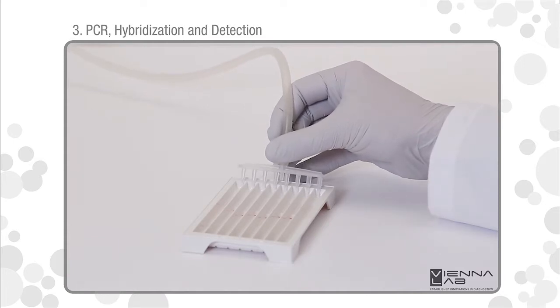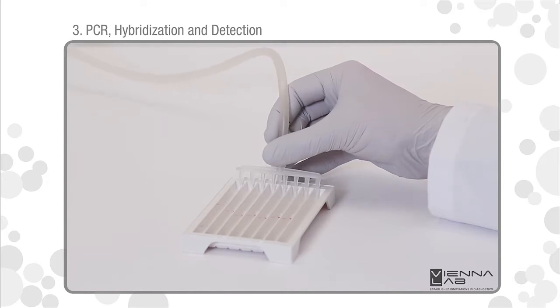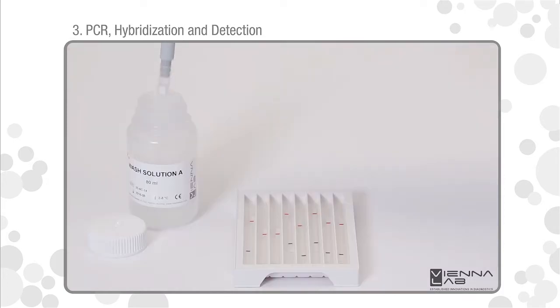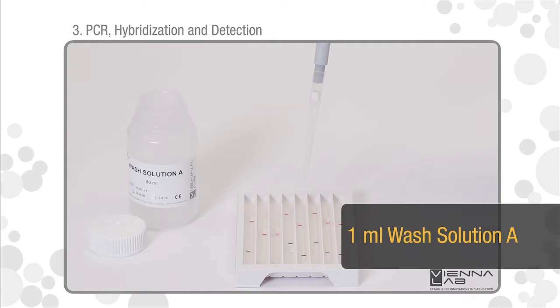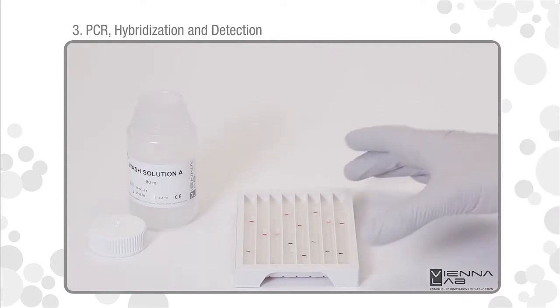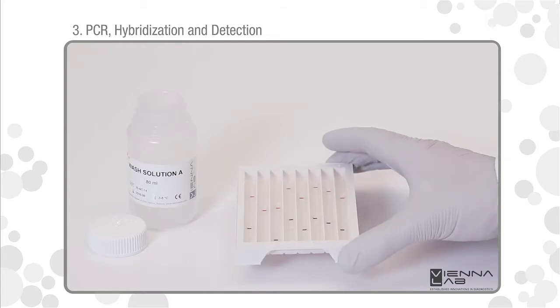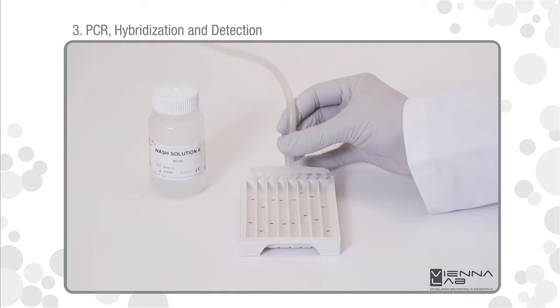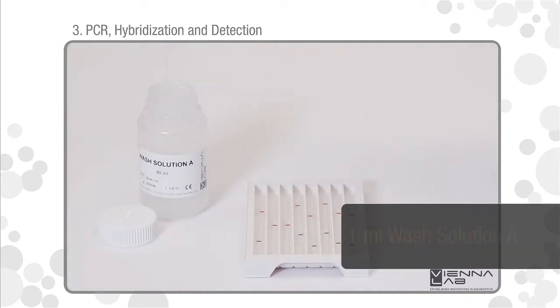At the end of incubation, remove hybridization solution by vacuum aspiration. Proceed immediately. Do not allow test strips to run dry during the entire procedure. Add one milliliter wash solution A pre-warmed to 45 degrees Celsius. Remove liquids by vacuum aspiration. Add one milliliter wash solution A.